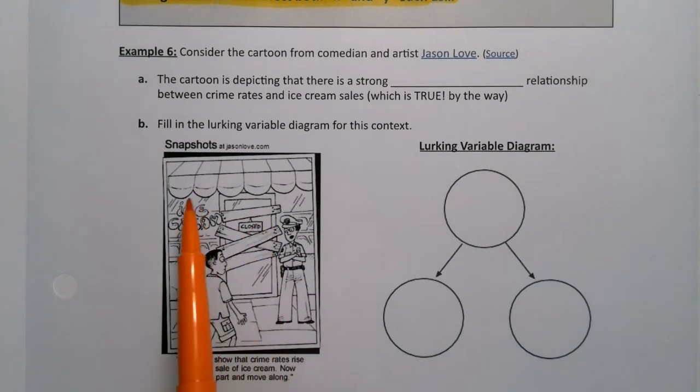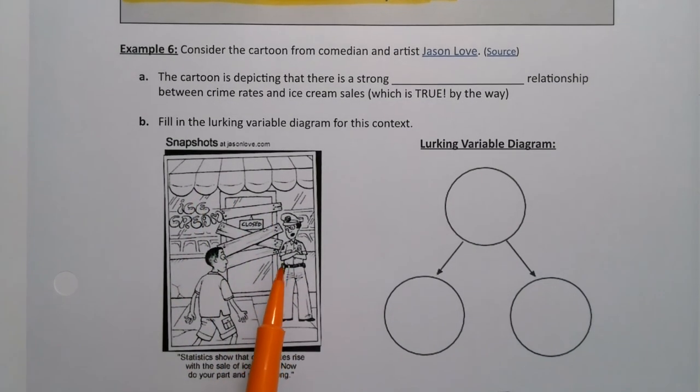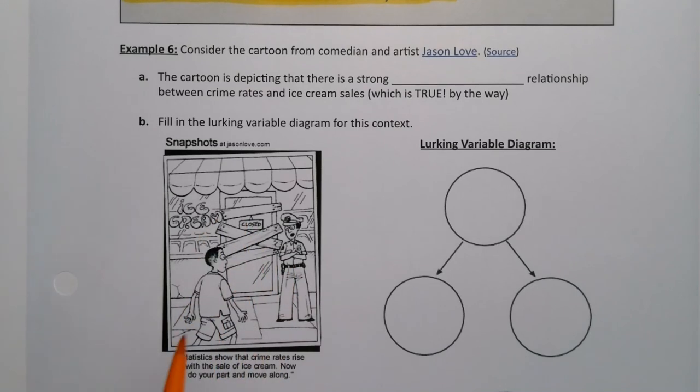So you can see we have a police person right here and they have their arms crossed over their chest and they're saying statistics show that ice cream rates rise with the sale of ice cream. Now do your part and move along. So they've boarded up the ice cream shop. This person's not going to be allowed to buy ice cream. Now there's nothing worse than explaining a joke which ruins it entirely, but I'm going to do that just the same.